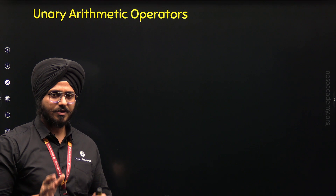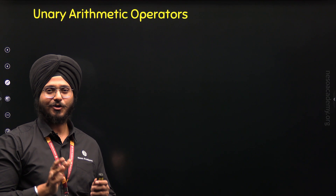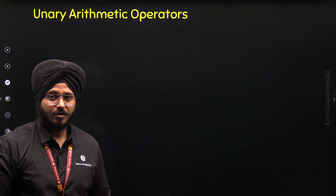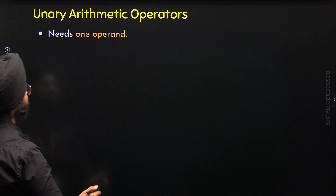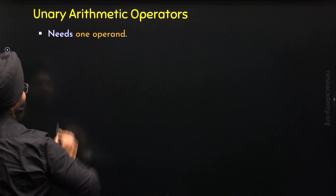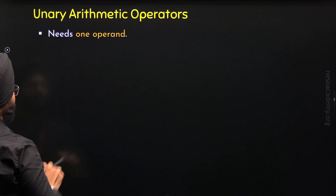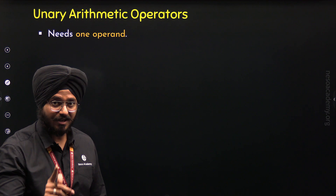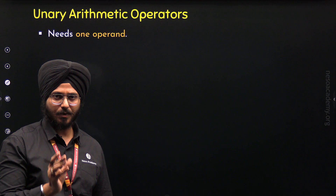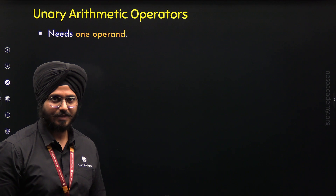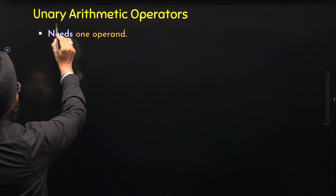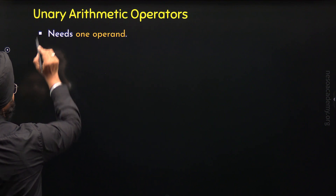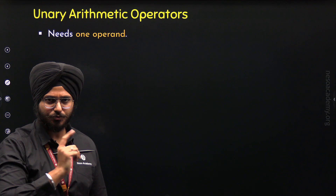So what is a unary arithmetic operator? A unary arithmetic operator is the operator that needs one operand. It can perform an operation on one operand, or a single value. Operand represents a value. That's why the name unary arithmetic operators — here, the word unary means one.